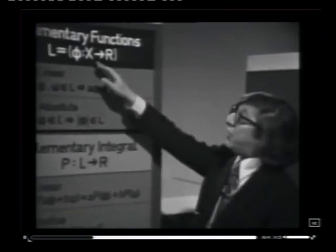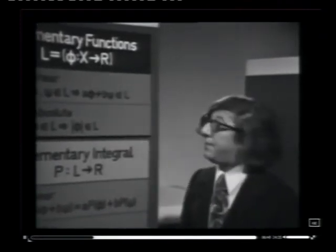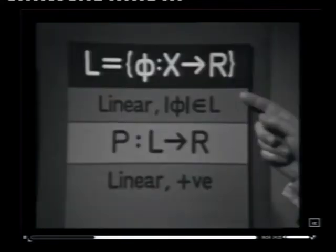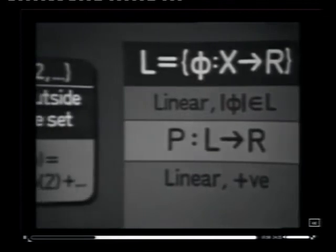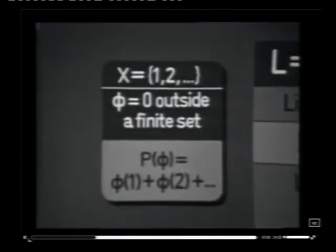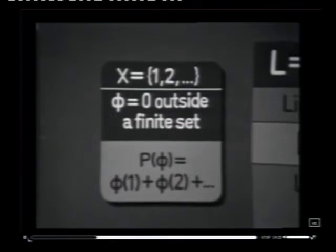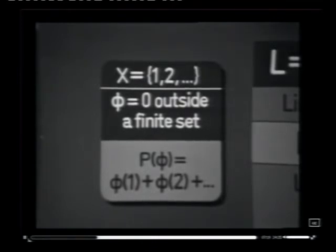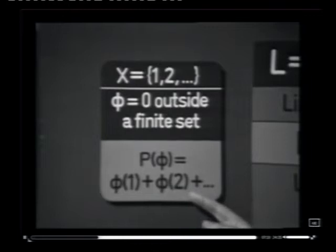Before I carry on with this general construction, I must emphasize that I can take any system whatsoever obeying these axioms — they don't have to look anything at all like step functions and the areas of step functions. For example, I could take for the arbitrary set X a set of positive integers. Here I've abbreviated my conditions, and here is my specific example. I'm claiming that this set of functions phi and this operator P obey my axioms. The set of functions are those which vanish except for a finite set, and the operator P is defined on them by being just that finite sum of their values.